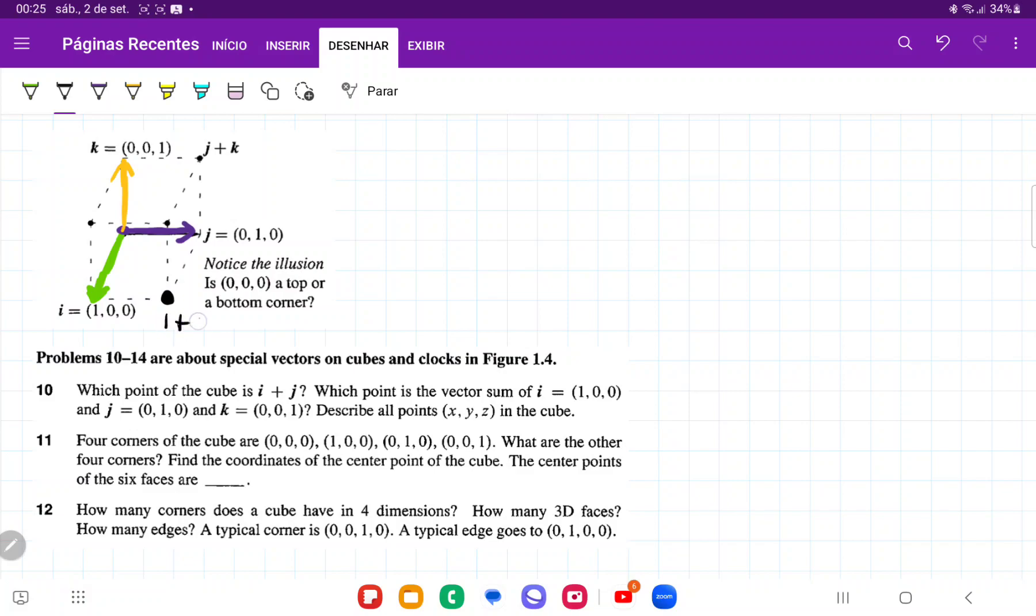This is going to be i plus j. So maybe we can say that i plus j is a bottom corner.